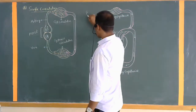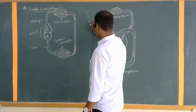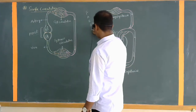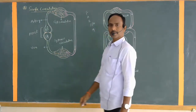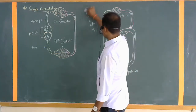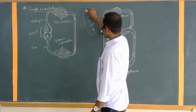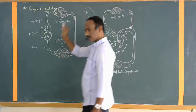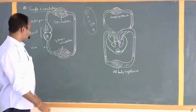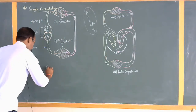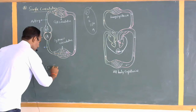To summarize: fishes, amphibians, reptiles, birds or aves, and mammals. Out of these, the first category of animals are known as fishes. The example for single circulation is fishes.